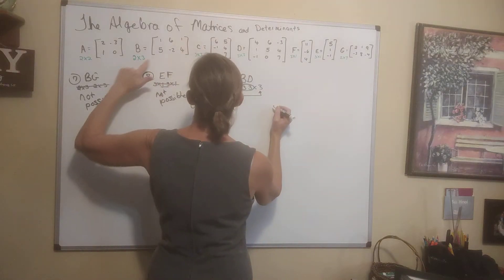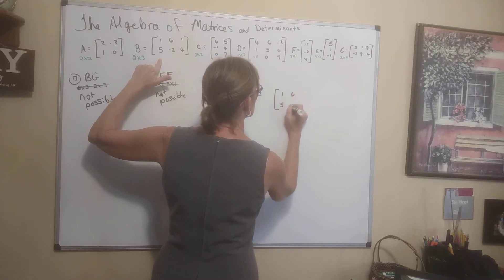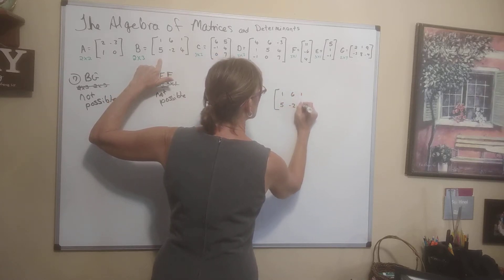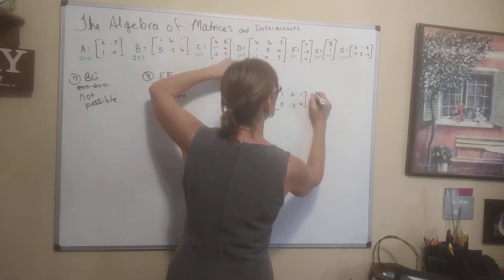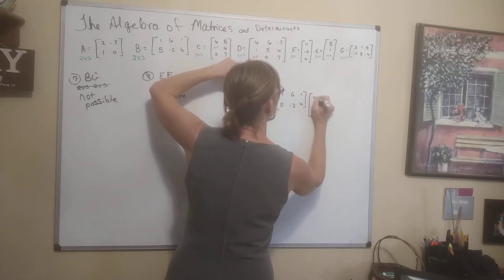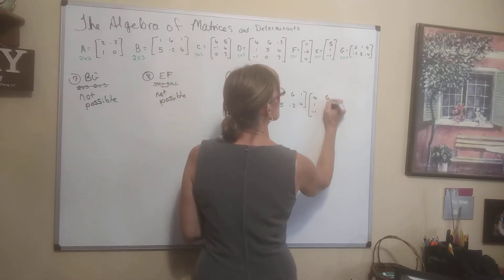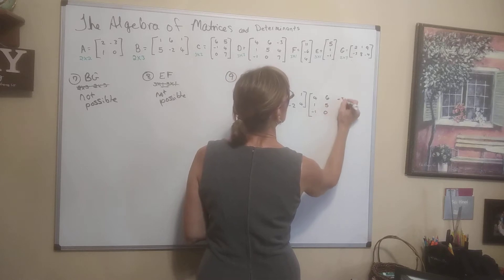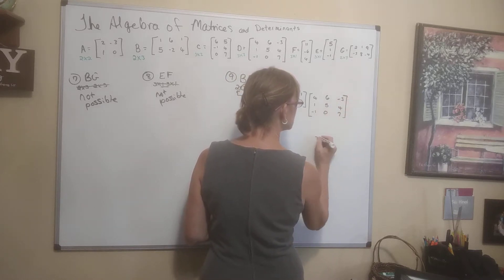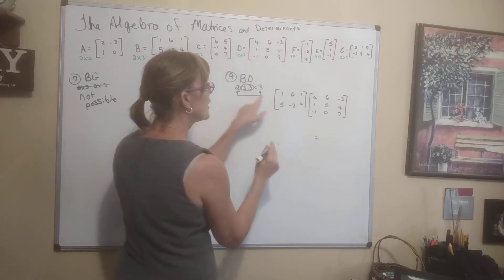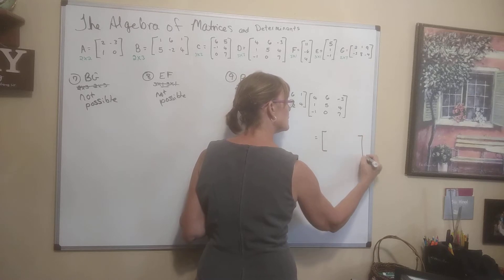Let me write this down. B is: 1, 5, 6, negative 2, 1, 4. D is: 4, 1, negative 1, 6, 5, 0, negative 3, 4, 7. The resulting matrix is going to be a 2 by 3, so let me plan for that.